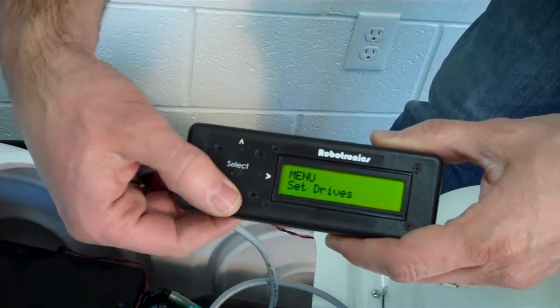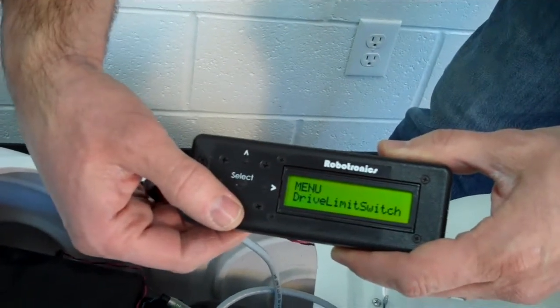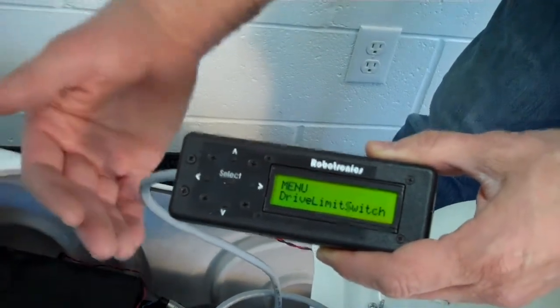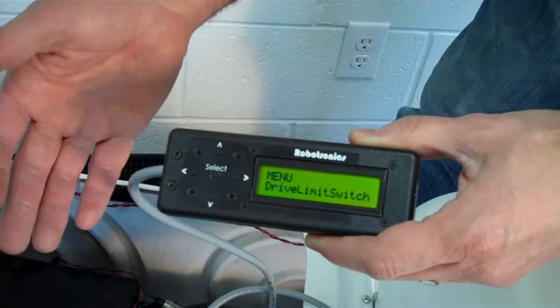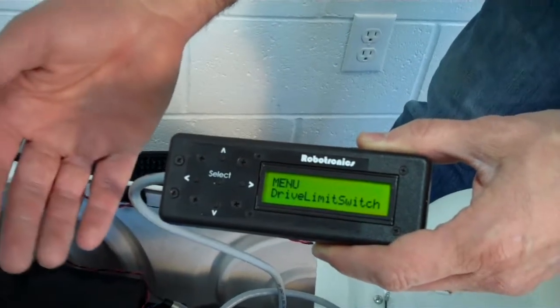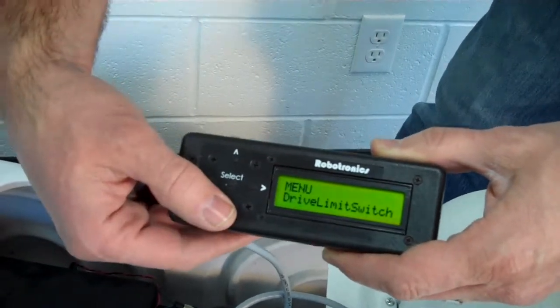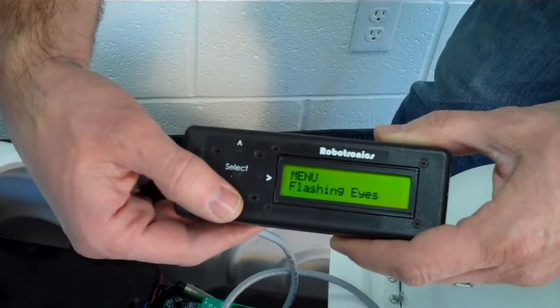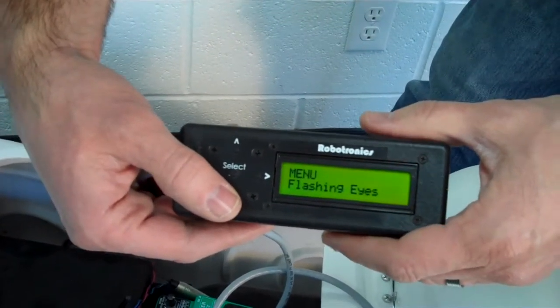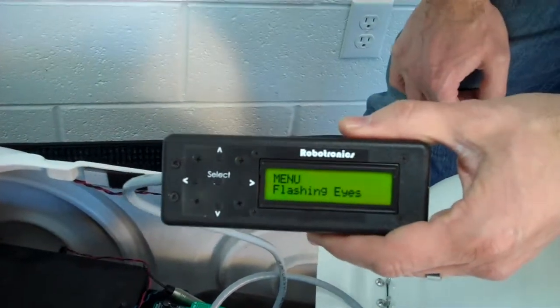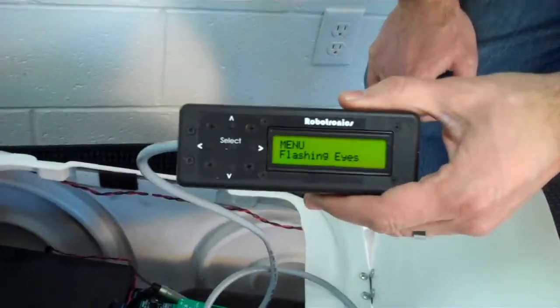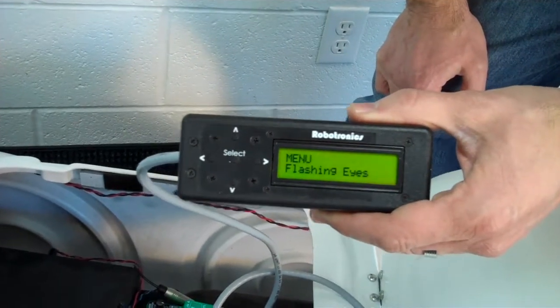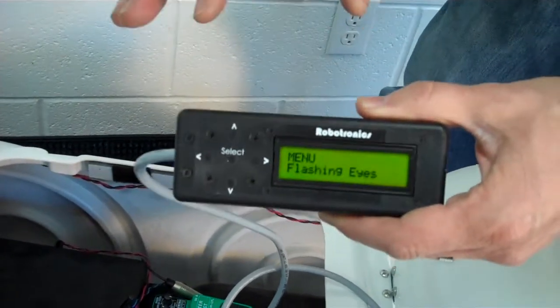And here we have the drive limit switch, which can change how the controls on the RC work. You'll need to refer to the manual to understand that better. And then we have flashing eyes. This is not applicable to all the robots. Robots that have eyes that are lit up is where this affects.